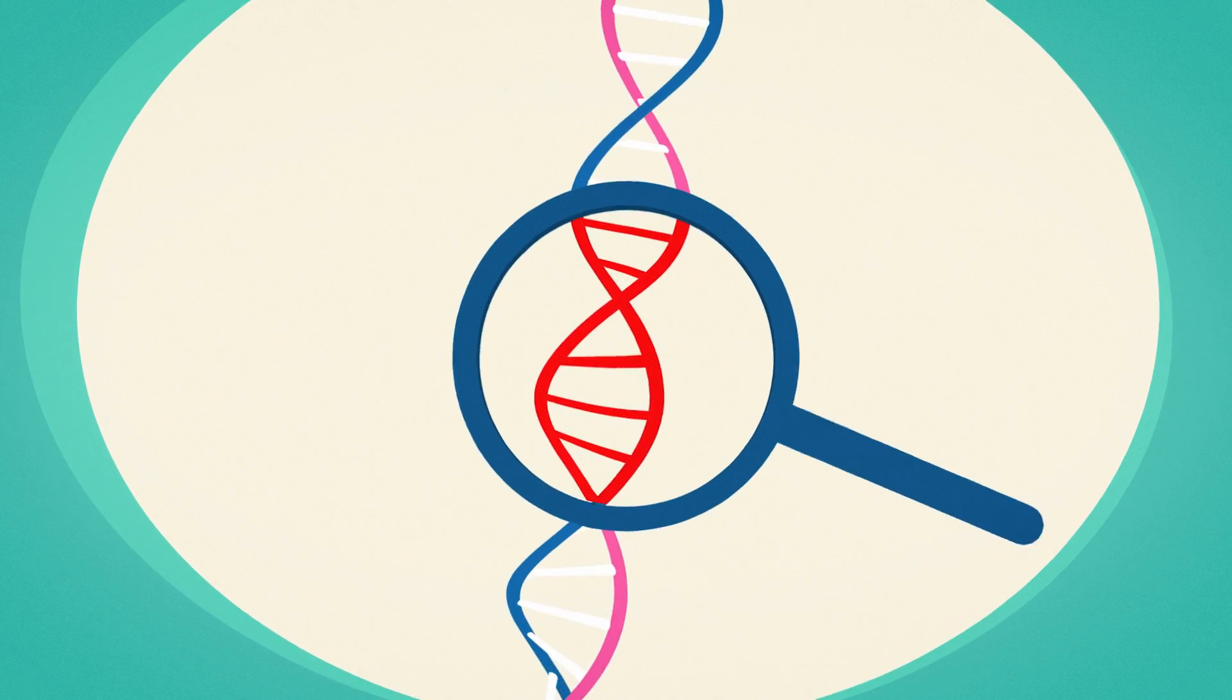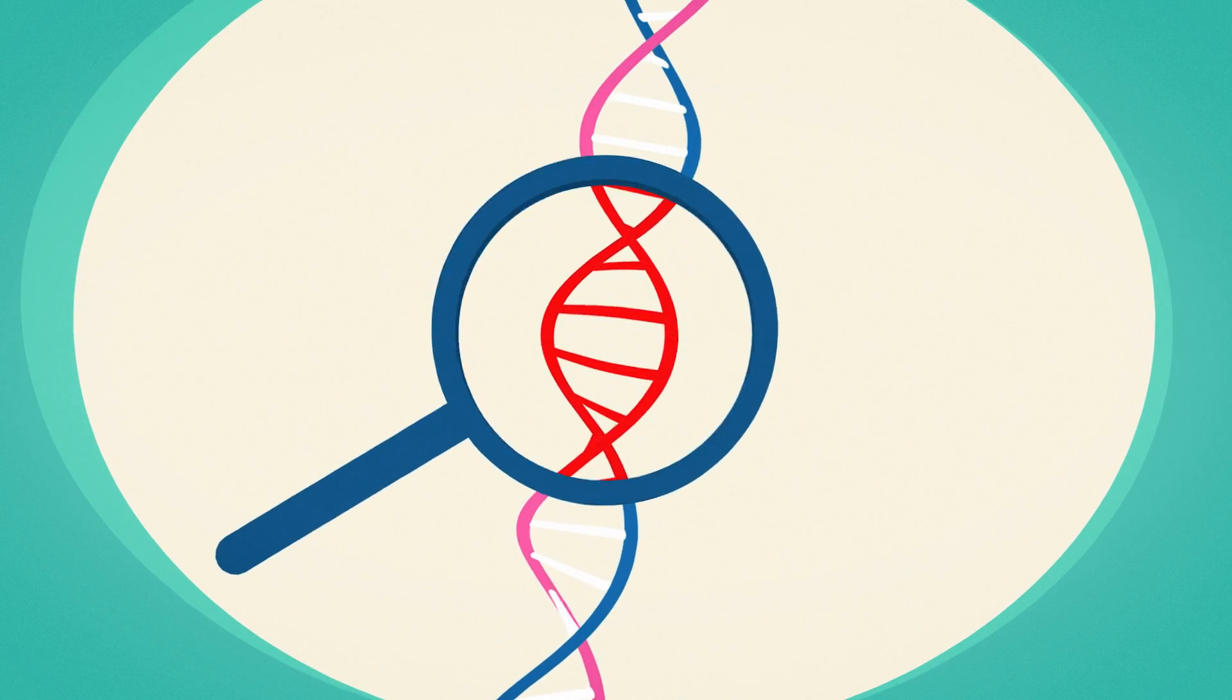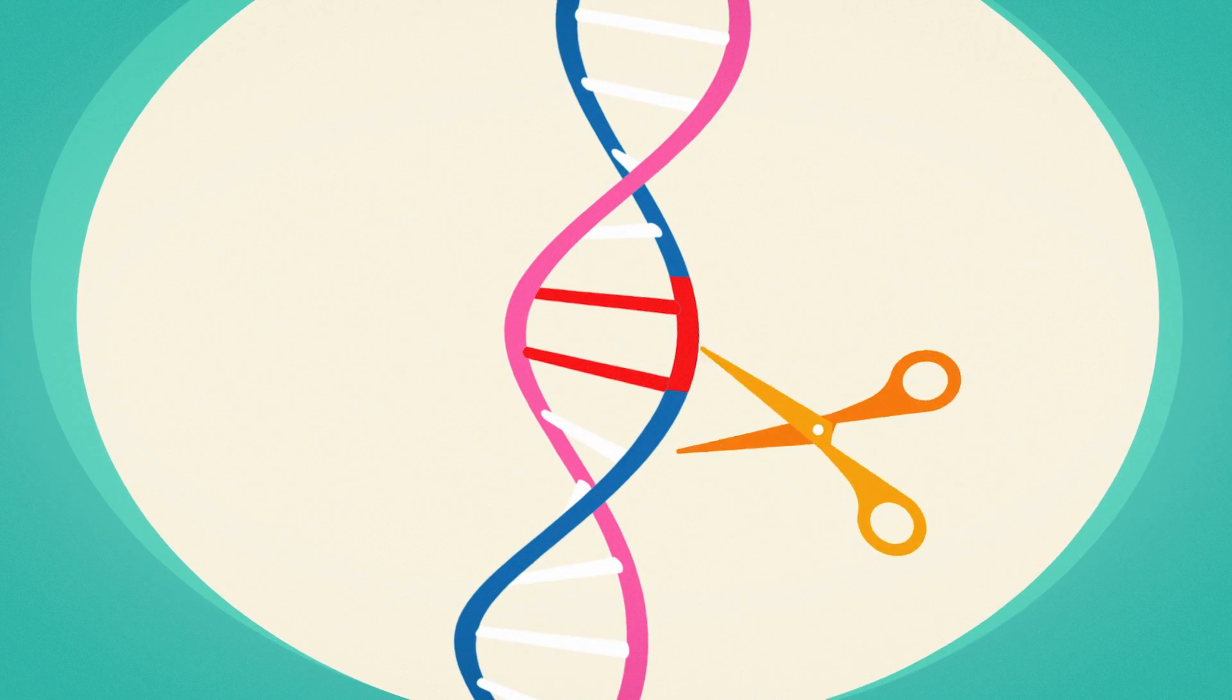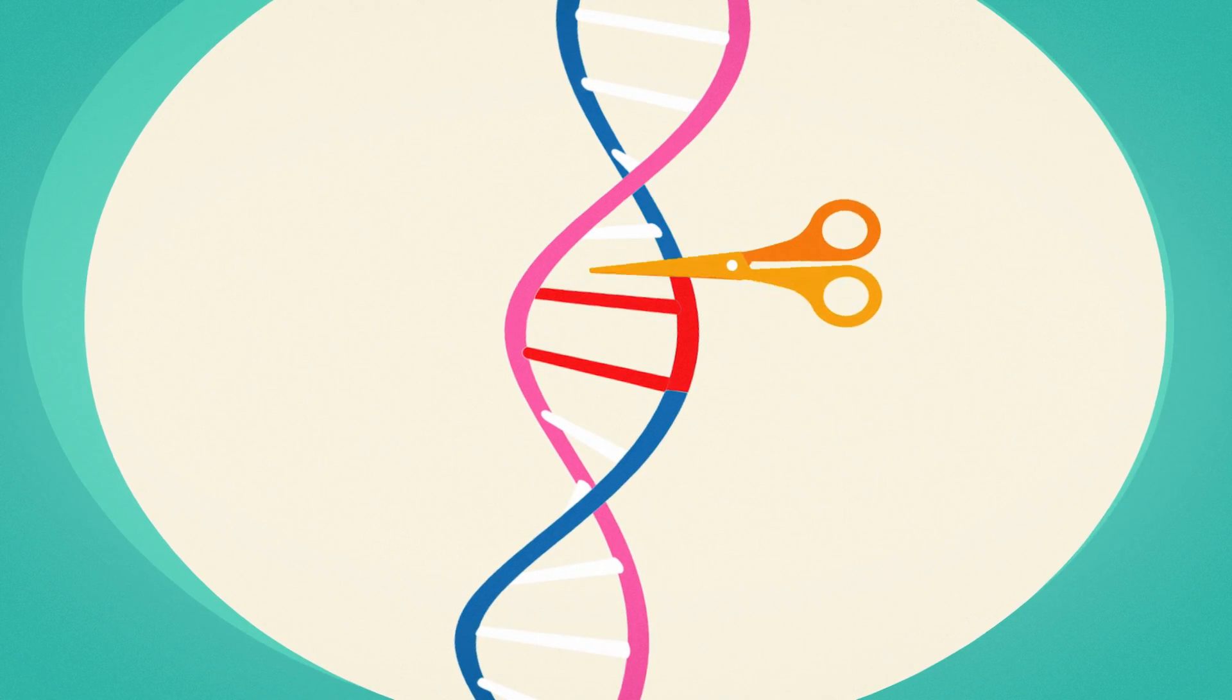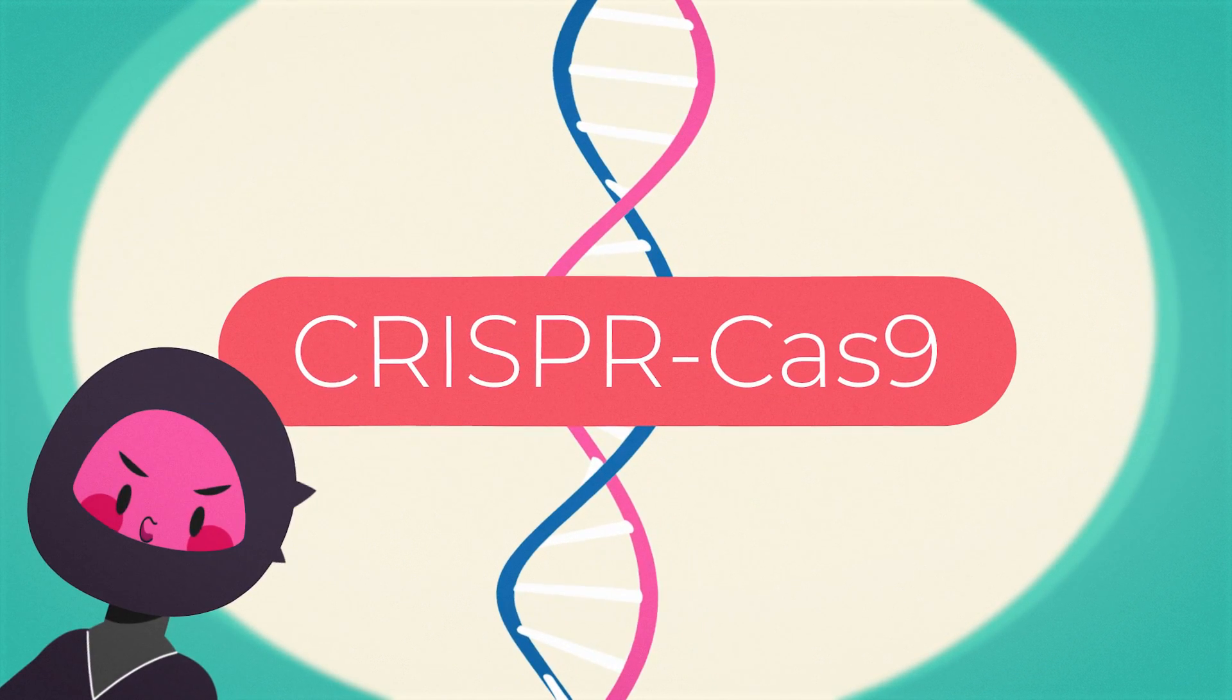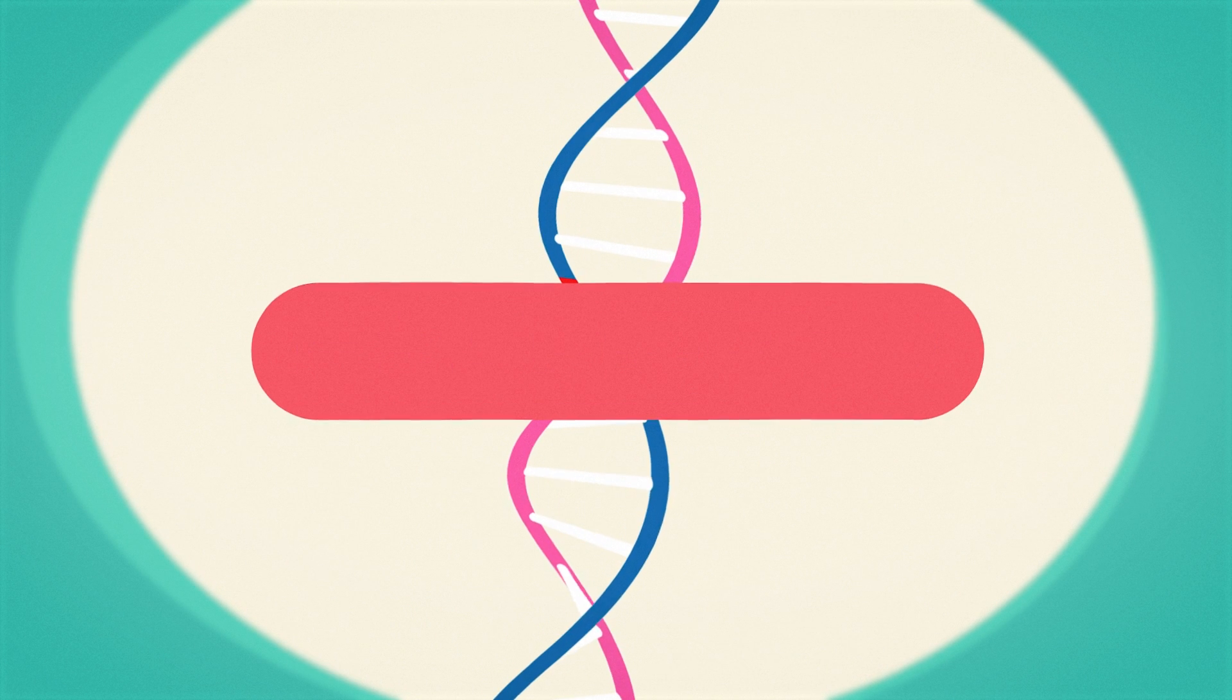Scientists have been identifying problem-causing genes for many years. To fix even one problem, the faulty gene needs to be repaired in as many cells as possible. To find and eliminate such genes, they turn to special agent CRISPR. Here's how it works.